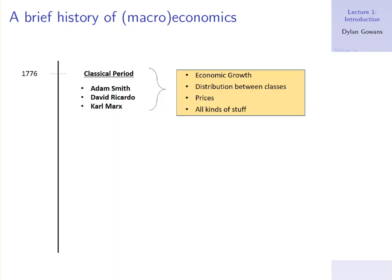What were they interested in? Well, it was this early science at the time, so they really had these broad interests. They talked about all kinds of things. If you look at the table of contents for the Wealth of Nations, you'll see that Smith covers so many different things — economic growth, distribution between classes, what determines prices, just all kinds of things. No one had really settled on the main focus of the discipline, so they just talked about anything that related to the economy.